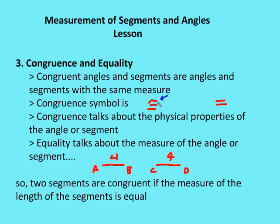For example, given segment AB and segment CD, I would say segment AB is congruent to segment CD. But the measure of segment AB, which is 4, is equal to the measure of segment CD, which is also 4. So two segments or angles are congruent when their measures are equal.